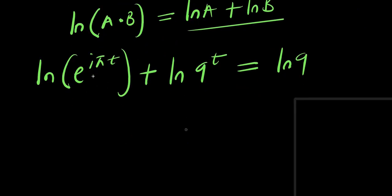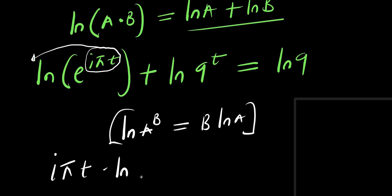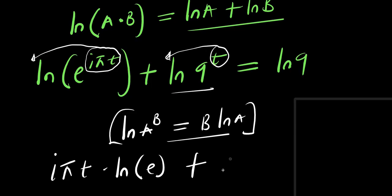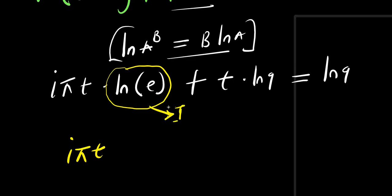We apply the power property again — ln of a to the power of b equals b times ln a — so the exponent i times pi times t comes in front: i times pi times t times ln e, plus t times ln 9, equals ln 9. Now ln e equals 1, so this simplifies: i times pi times t times 1, plus t times ln 9, equals ln 9.